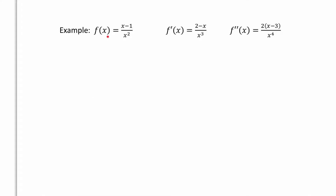For this example, the first and second derivatives have already been calculated — this is common on tests. They give you the derivatives to test your curve sketching knowledge rather than your derivative knowledge, but note that sometimes they won't be fully factored and you'll still need to do some factoring. Step 1: find the domain. Looking at the function, x cannot be 0, so the domain is (−∞, 0) ∪ (0, ∞).